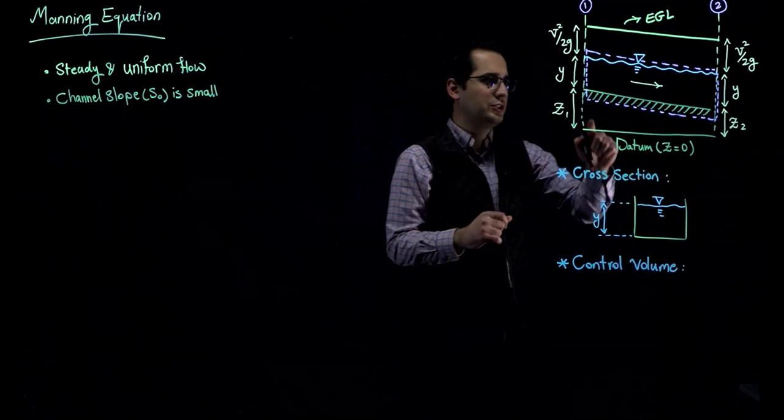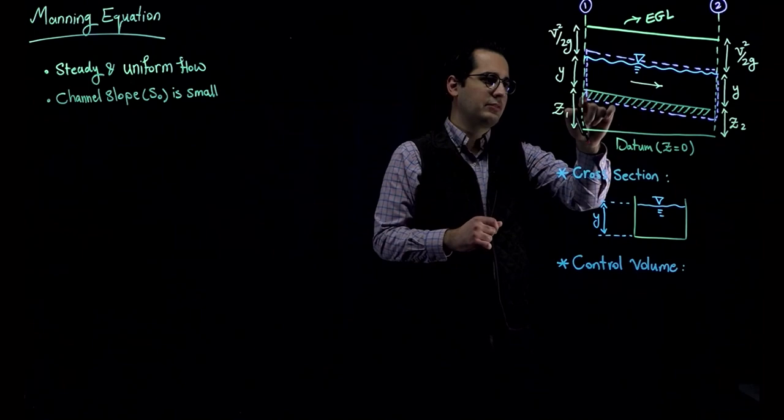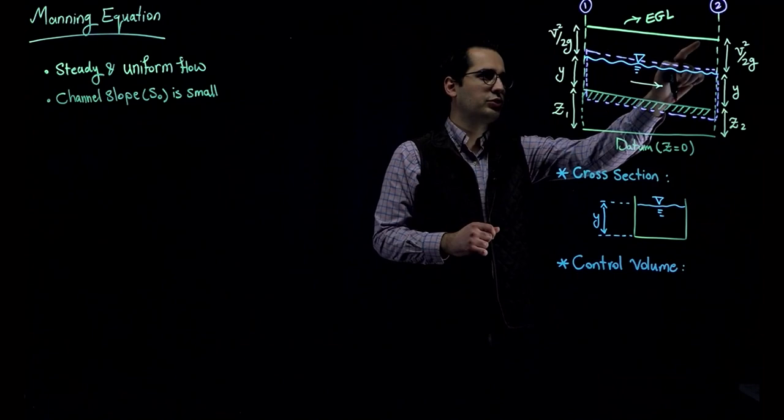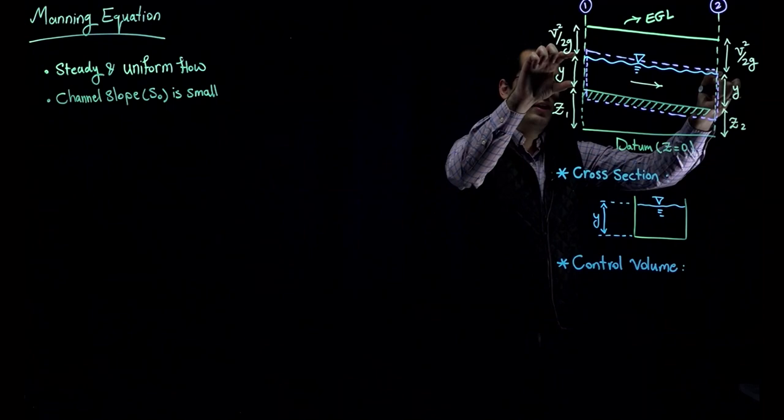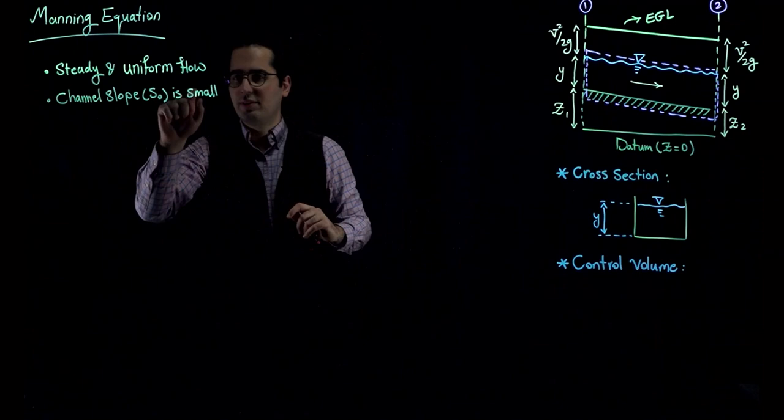Let's start from this figure here on top. This is a longitudinal section of a rectangular channel. We have the channel bed over here, the surface of water over here, and this is the energy grade line. The horizontal line over here is the datum, where elevation is equal to zero, and then you have your elevation head, depth of water, and velocity.